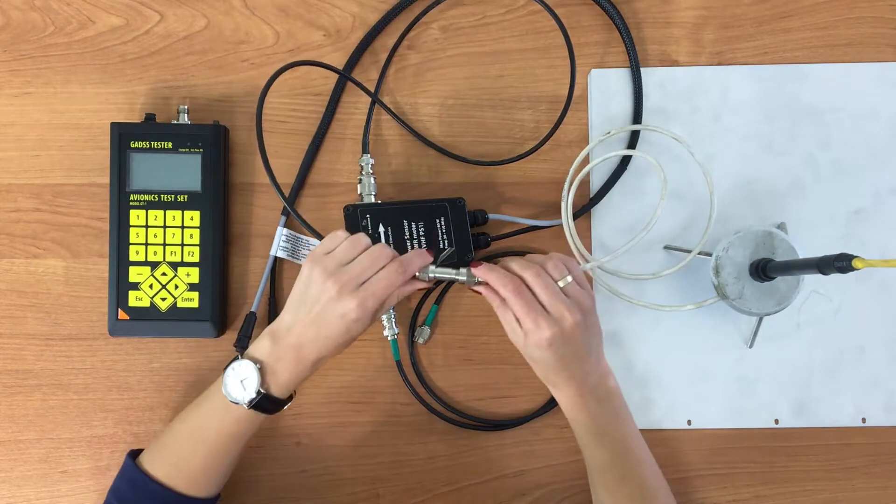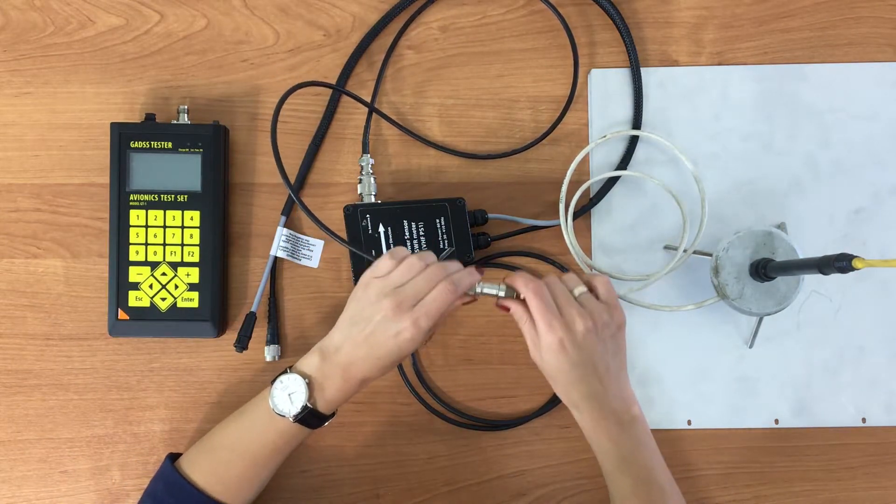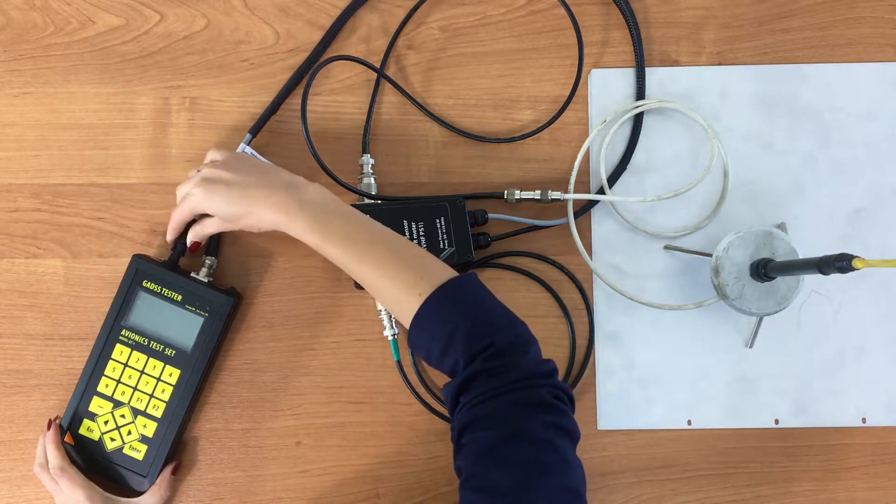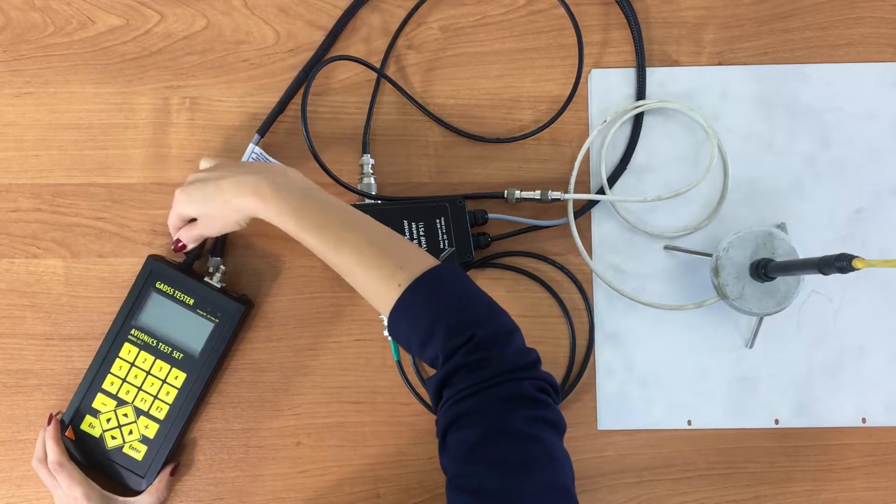First we connect the GT1 to the antenna with help of the power sensor and cables that are supplied in tester's complete set. The tester should be turned off while connecting.